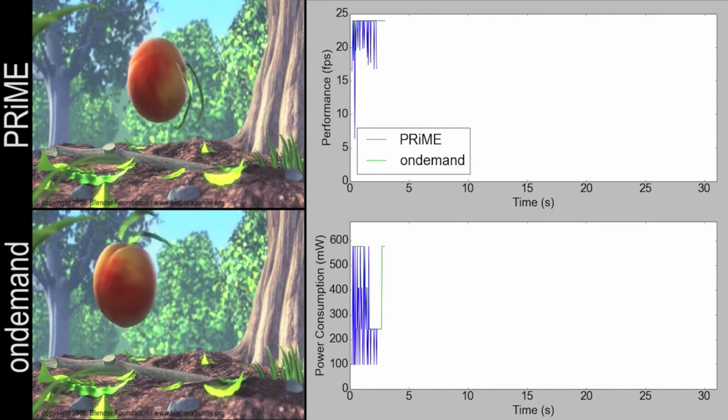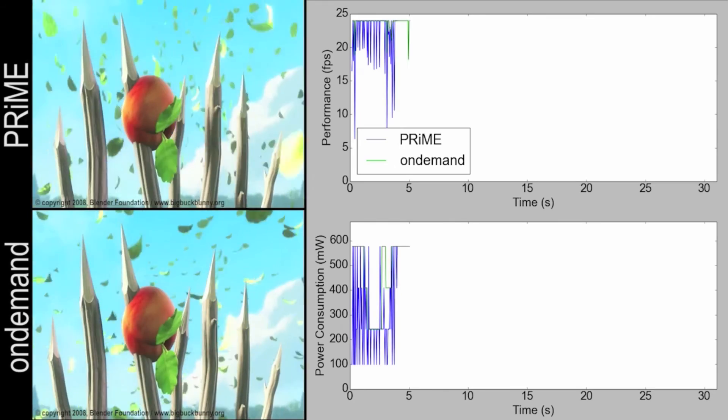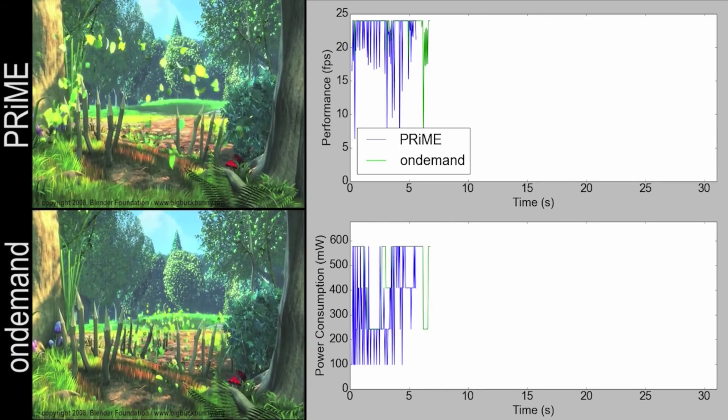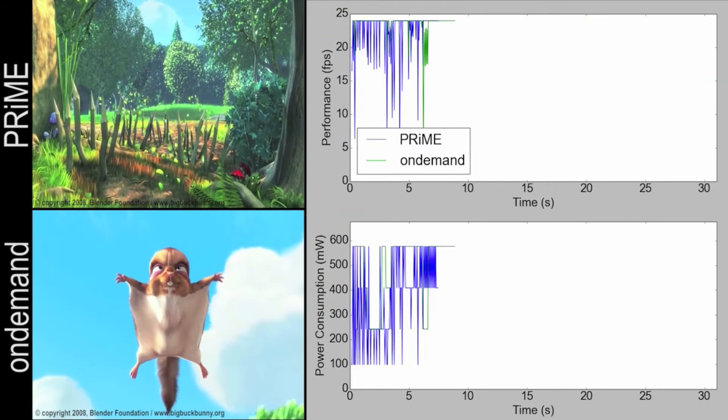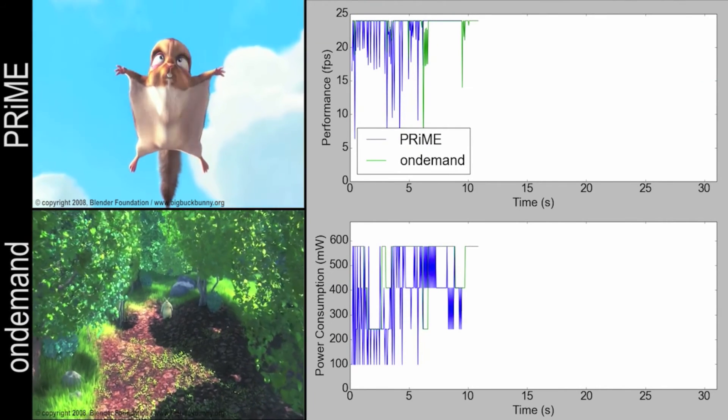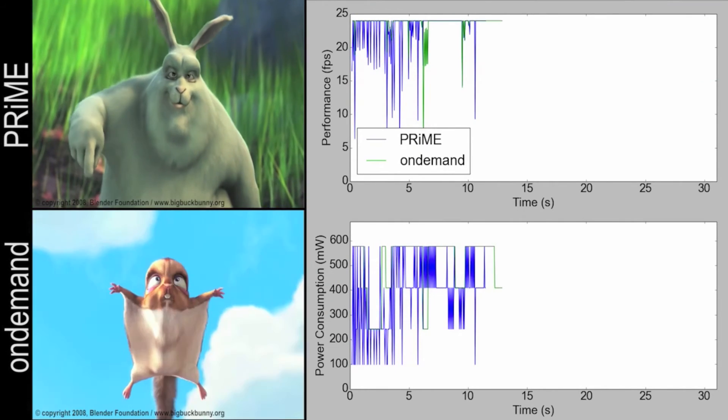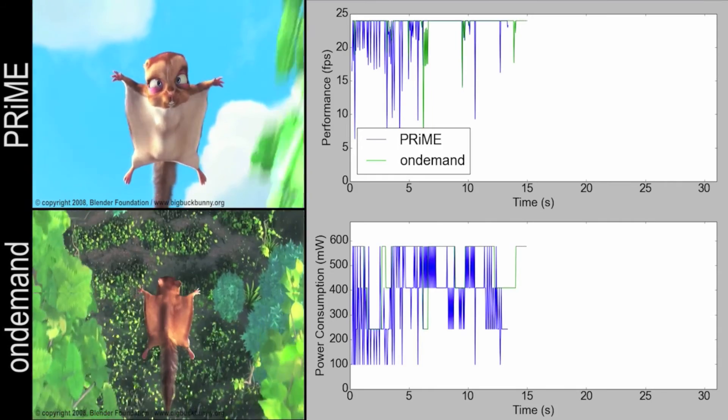And as the video begins you'll see that at the start the Prime video lags behind that of the on-demand one slightly. And that's because our approach is learning how long it's going to take to decode these different types of video frame.